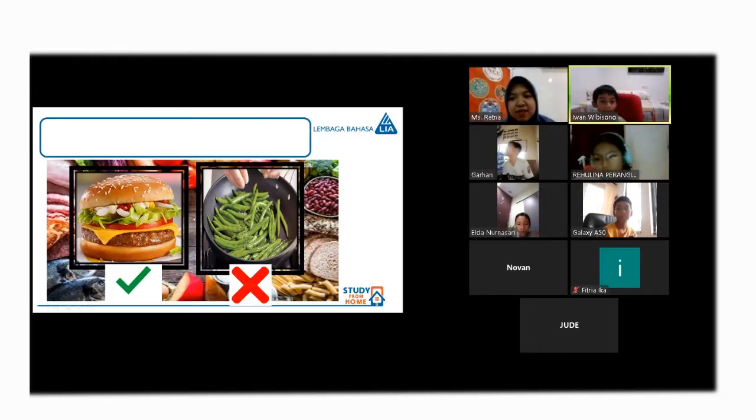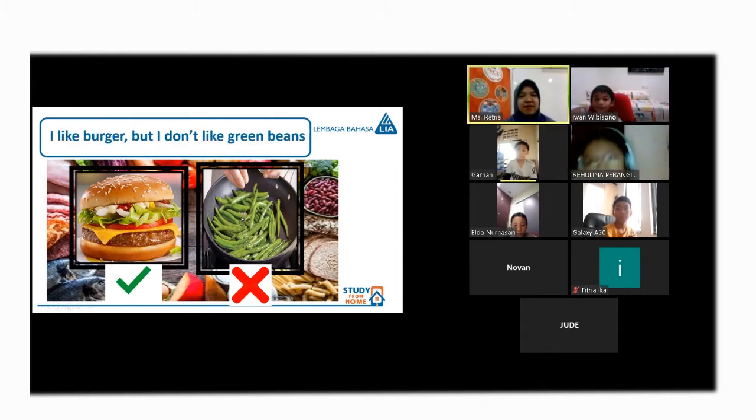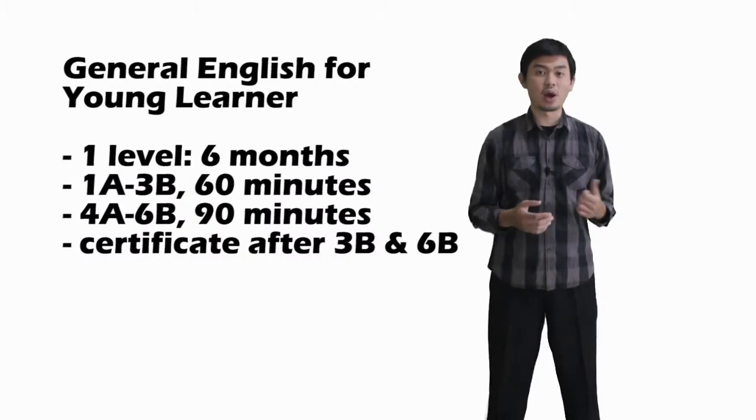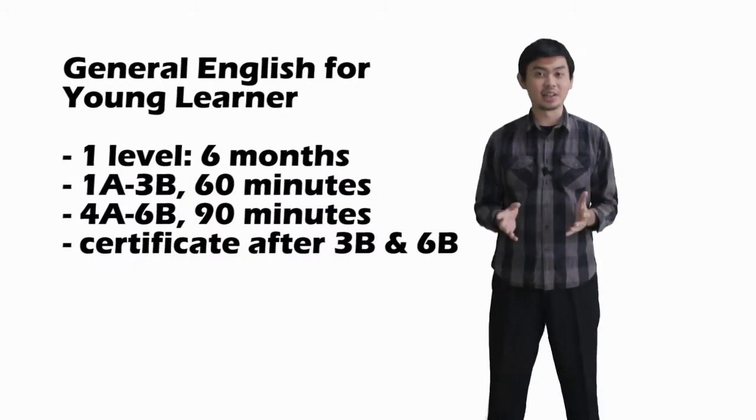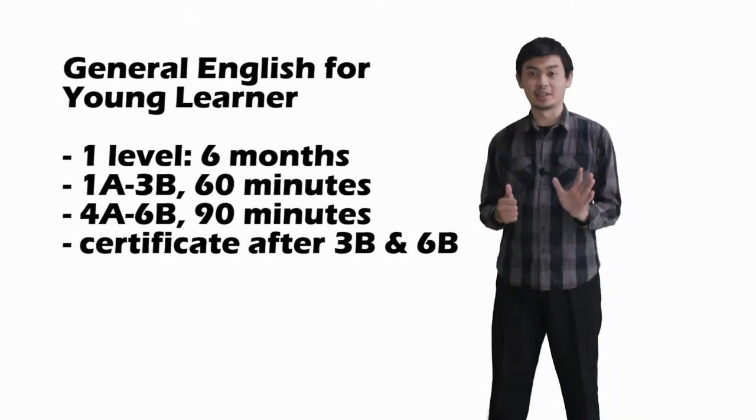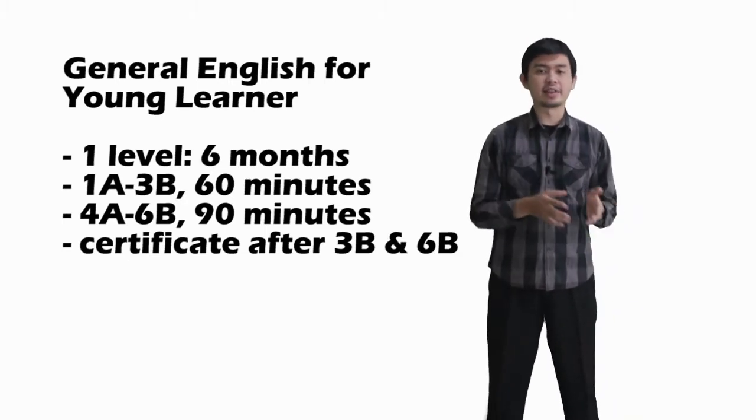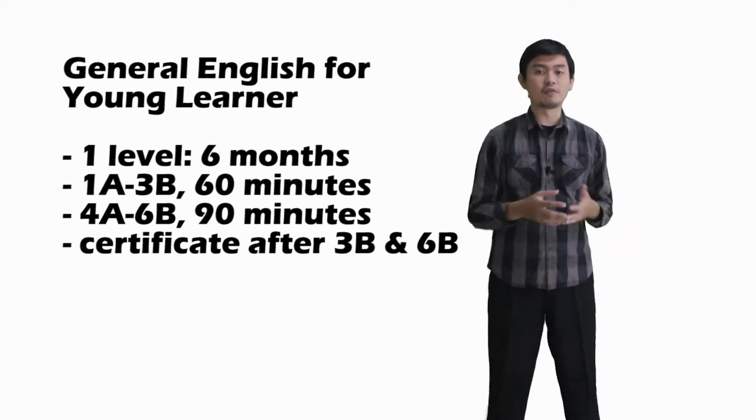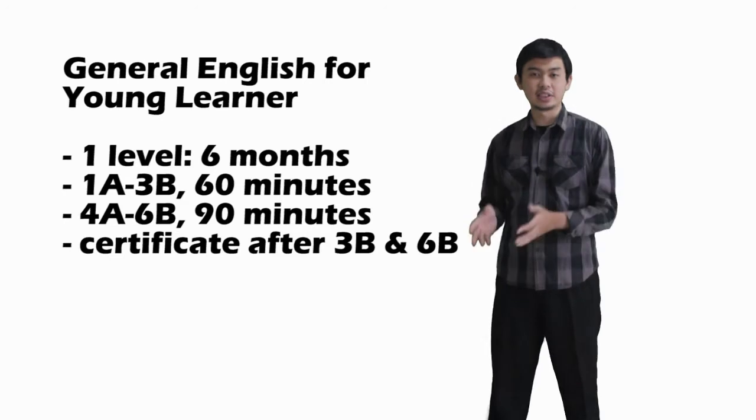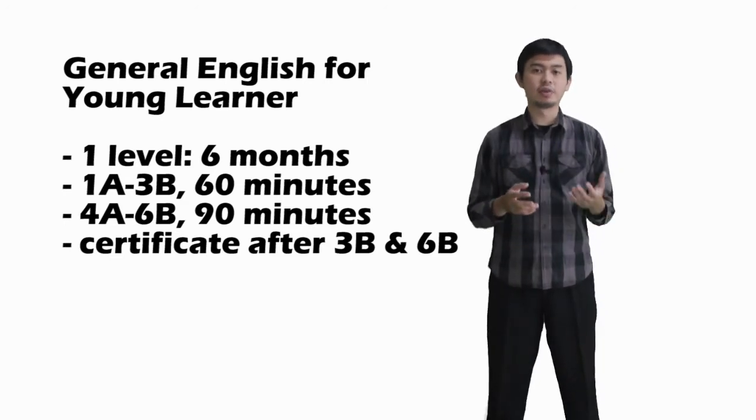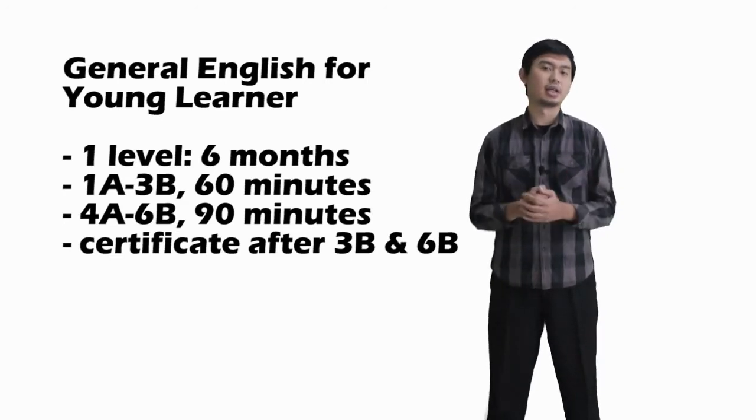The first one is GAL Program, General English for Young Learner. It is for elementary students. We have level 1A until 6B. One level is completed within 6 months period. For level 1A until 3B, the duration of the meeting will be 60 minutes. And for level 4A until 6B, the duration of the meeting will be 90 minutes.